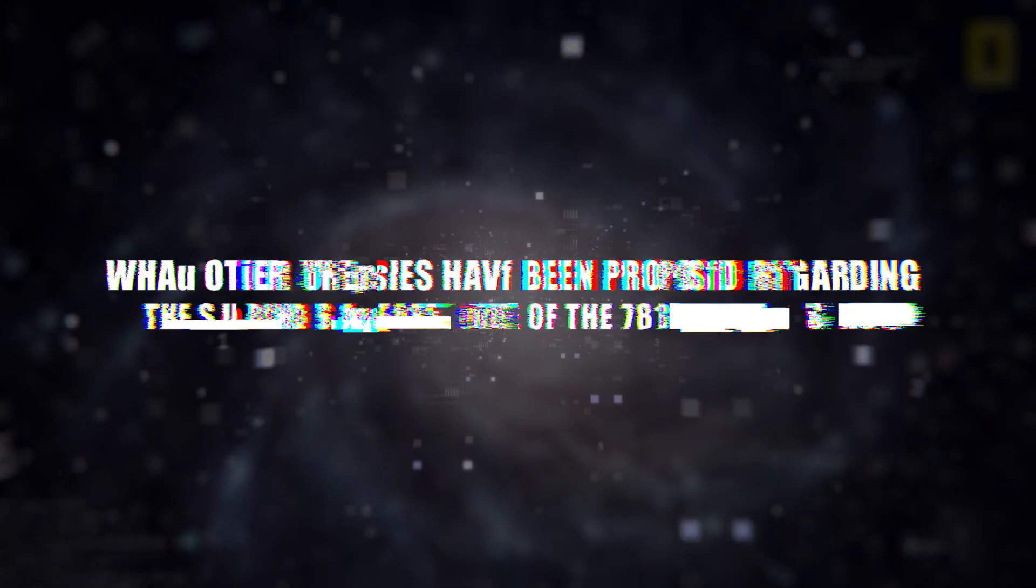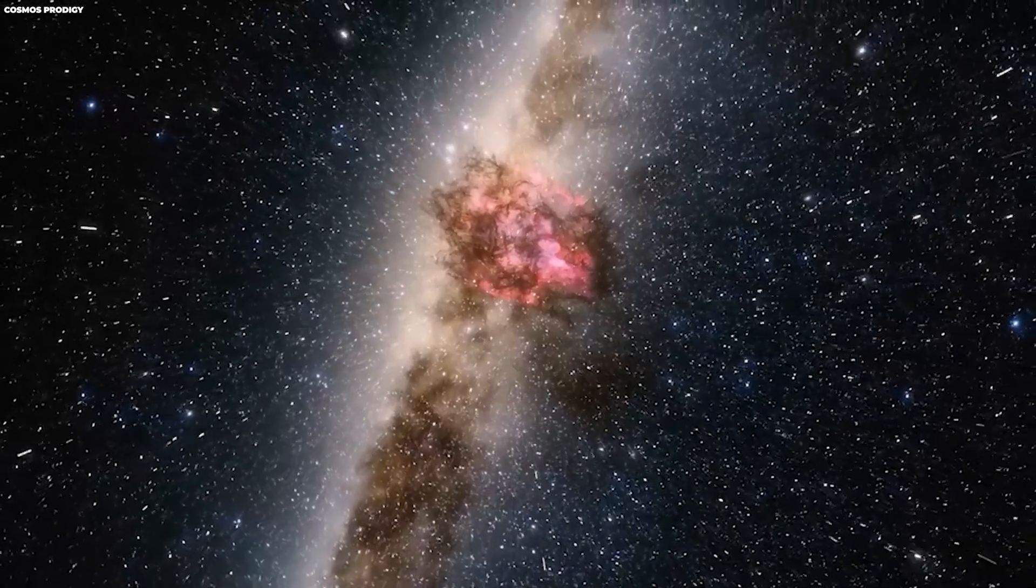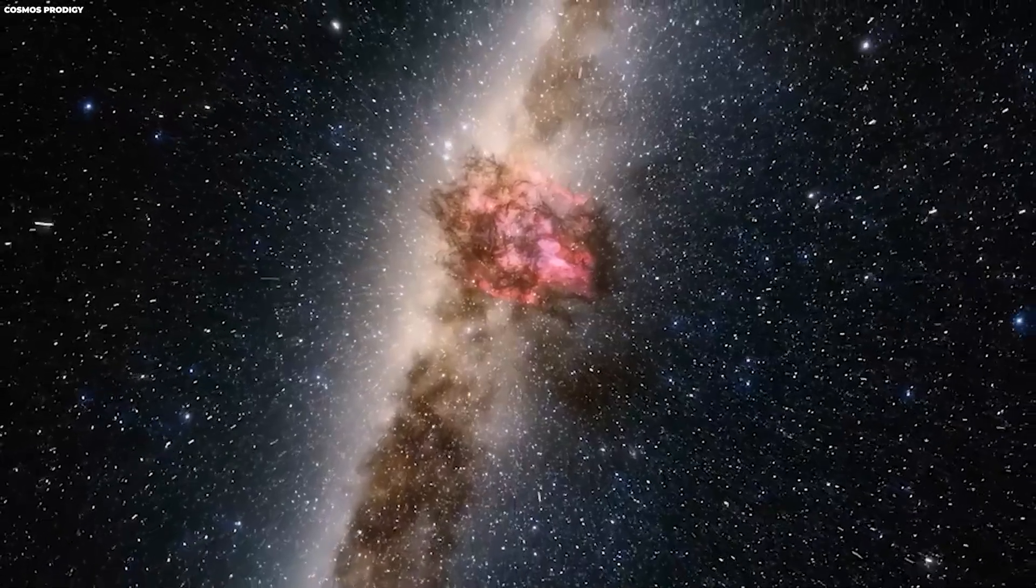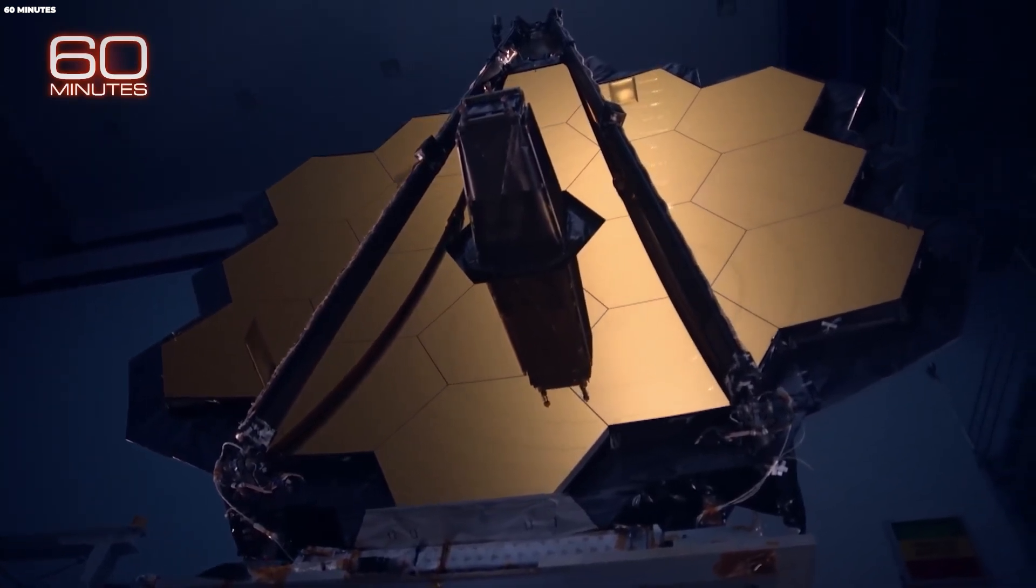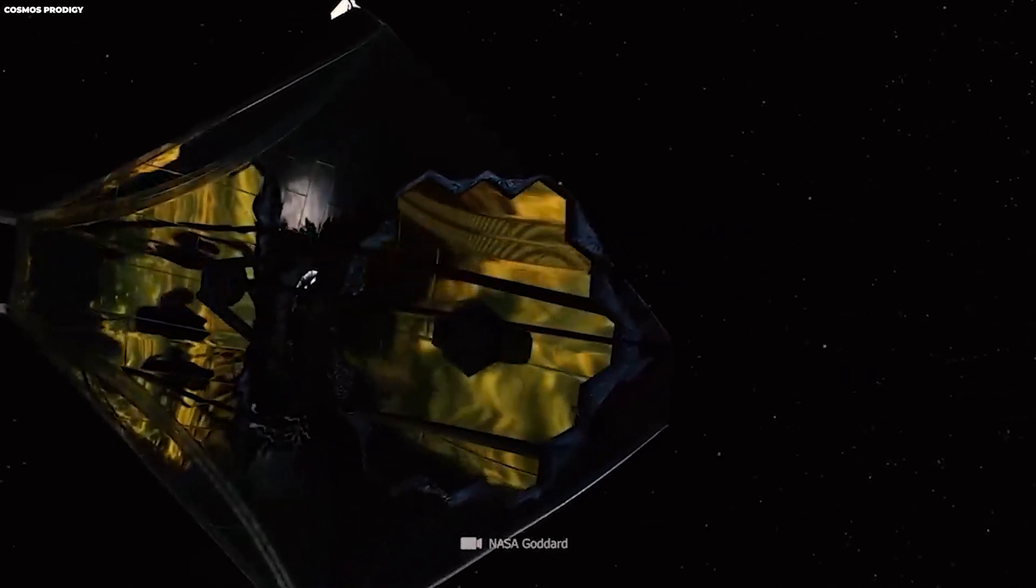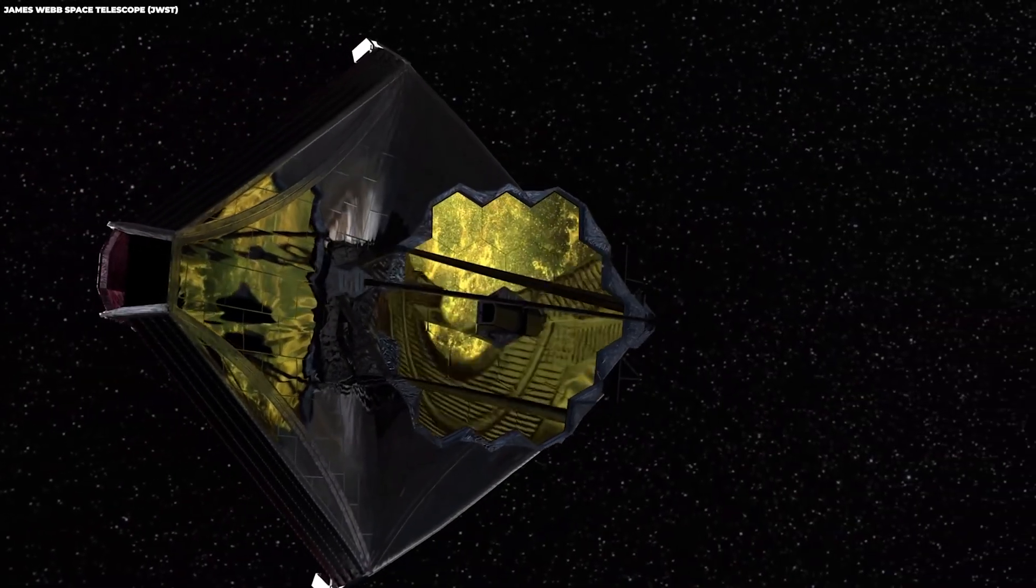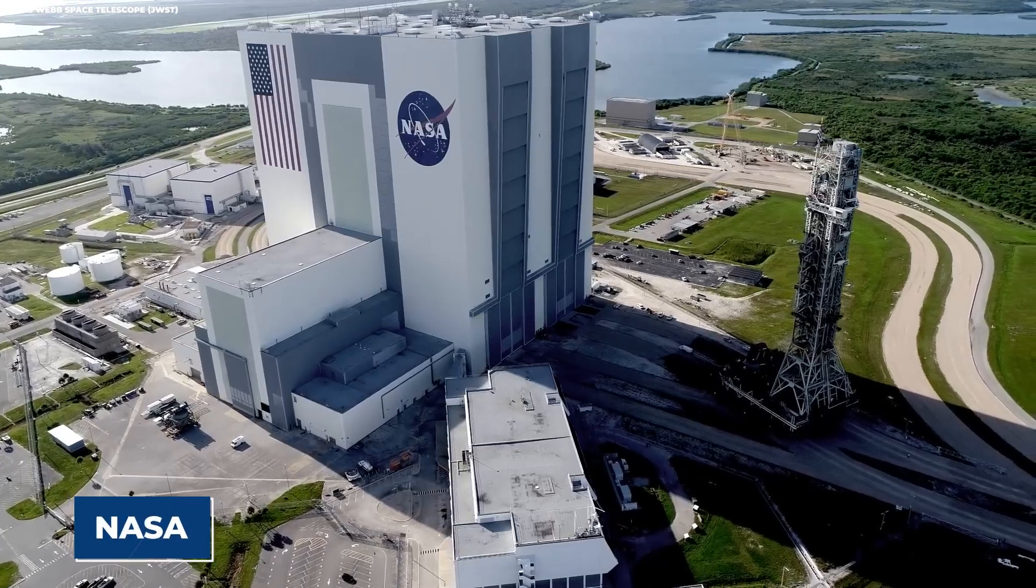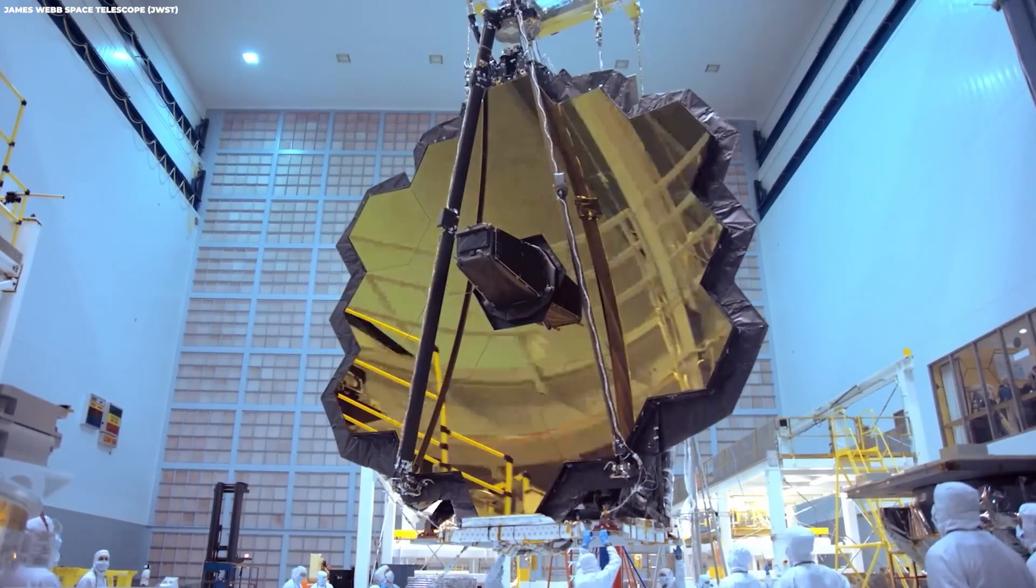What other theories have been proposed? Regarding the sudden disappearance of the 771 trillion stars, scientists have presented more theories that could be the answer to the stars vanishing. Within the astronomical community, there's a suggestion that the apparent disappearance of stars and planets might be linked to a flaw or malfunction with the JWST. This proposal speculates that the JWST could be encountering difficulties in detecting the light emitted by these celestial bodies, unlike its previous capabilities. To counter this theory, NASA, the agency overseeing the JWST, hasn't identified any errors with the telescope.